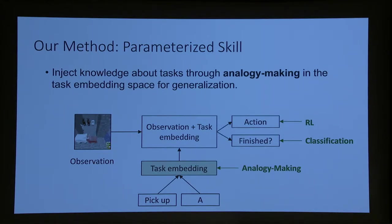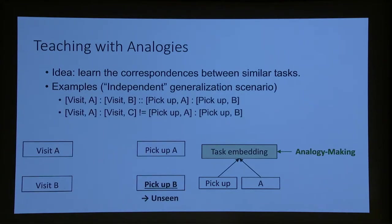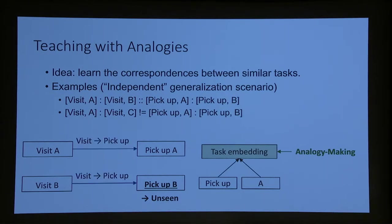The whole network is trained end-to-end. The only signal for task completion is a +1 if it completes the task successfully and -1 otherwise — a delayed reinforcement setting. The essential idea is that we insert analogy-making knowledge: 'visit A is to visit B as pick up A is to pick up B.' The difference between the embedding of 'pick up A' and 'visit A' should equal the difference between 'pick up B' and 'visit B.' This allows the agent to successfully solve 'pick up B' when only trained on 'pick up A,' 'visit A,' and 'visit B.'